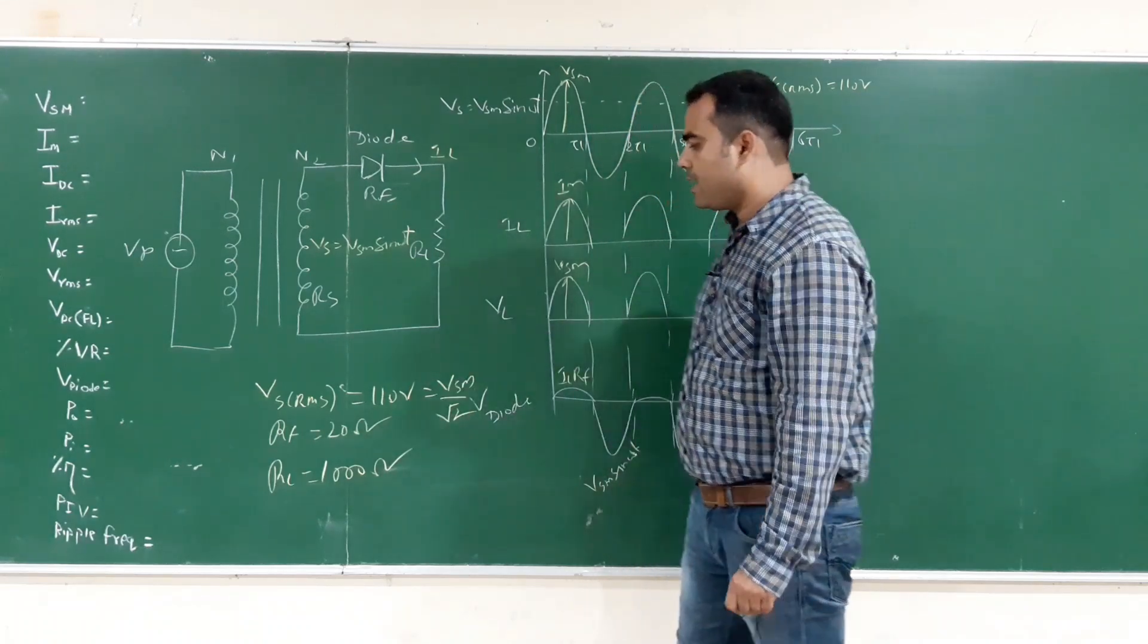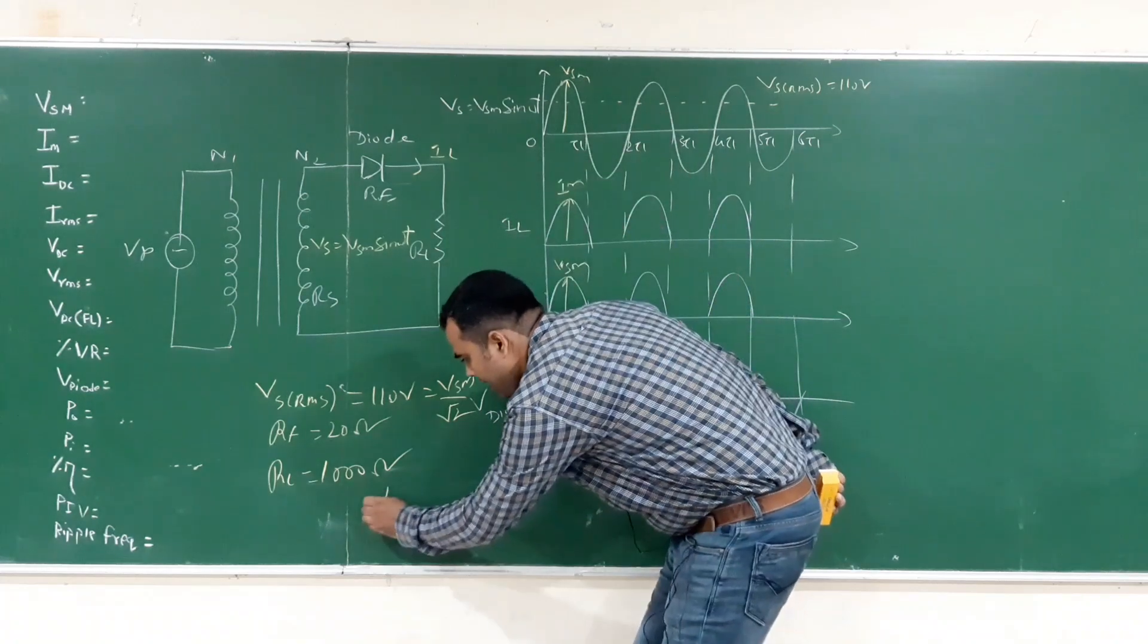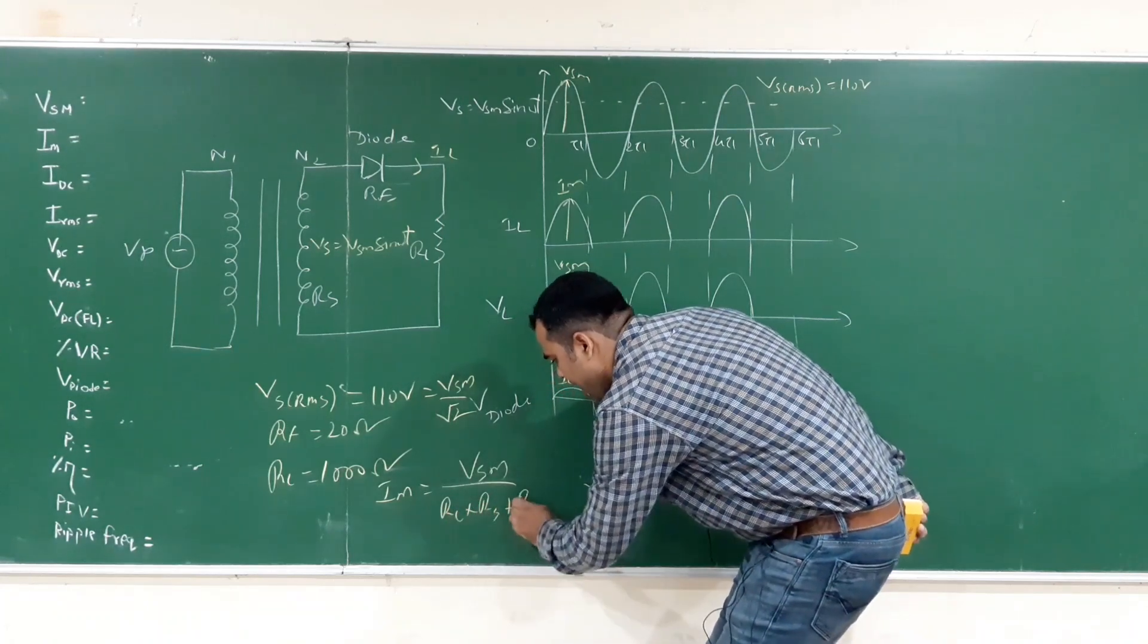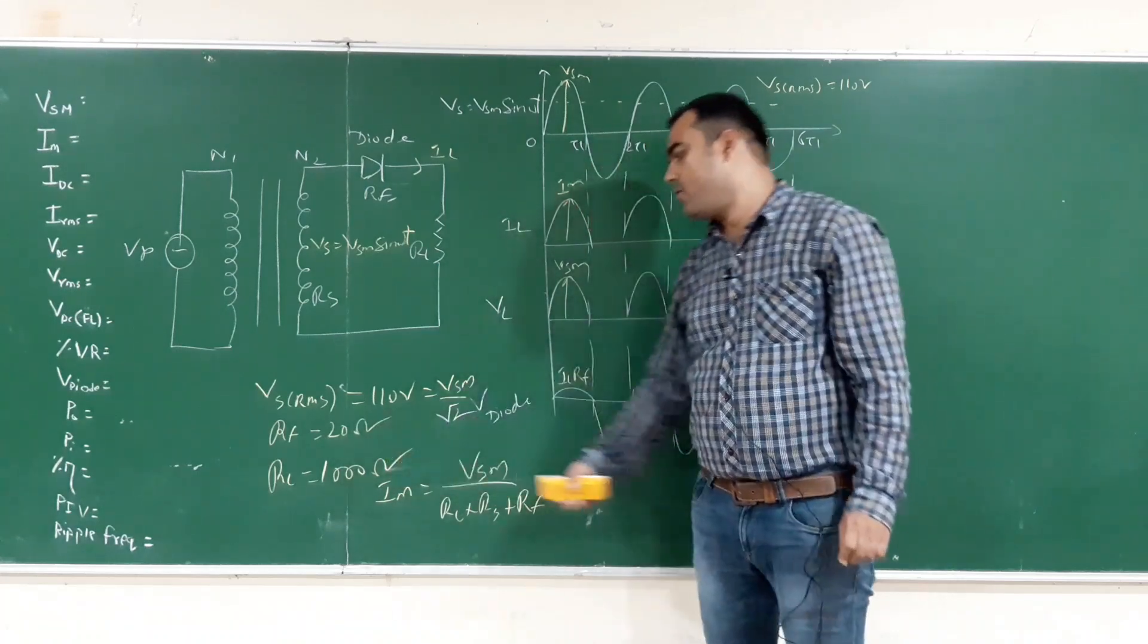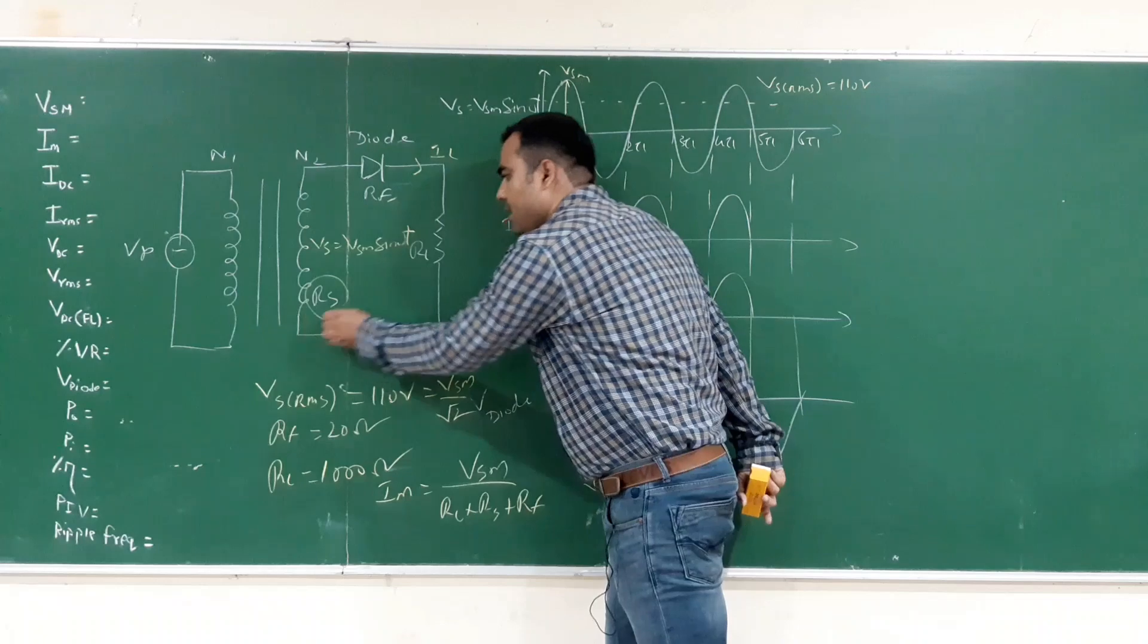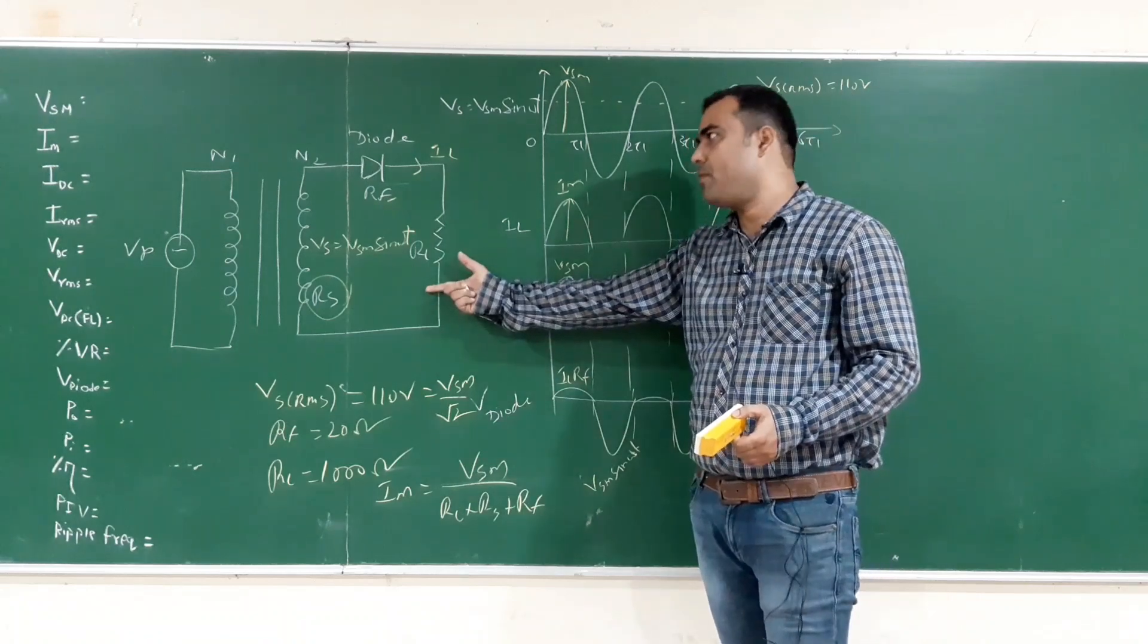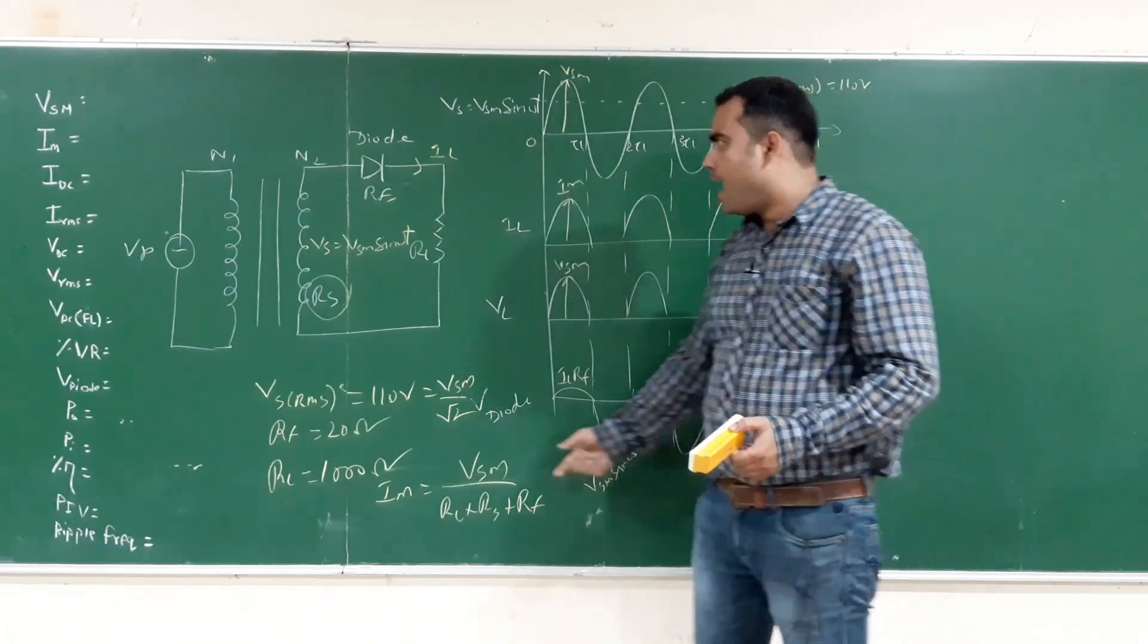After calculating Vsm, we have the formula to calculate IM. IM equals to Vsm upon RL plus RS plus RF. RL and RF values are given. RS value is not given. That means we are assuming ideal transformer. That's why its value is not provided.